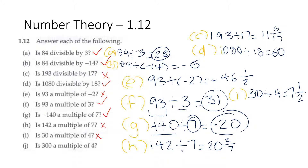The last one: is 300 a multiple of 4? 300 divided by 4 is equal to 75. So that means 75 times 4 is equal to 300. So 300 is a multiple of 4.